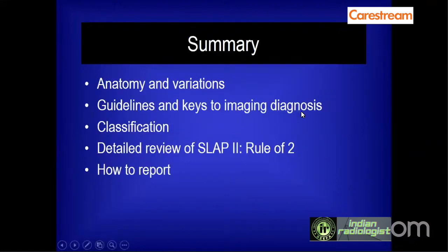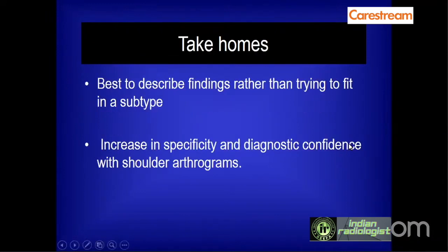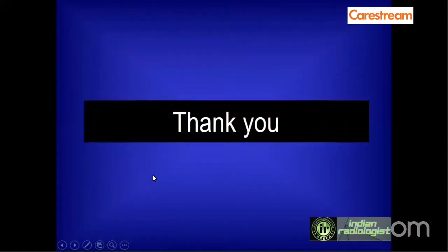To summarize: we dealt with anatomy and variations of the labrum, highlighted that variations are far more common than believed, studied imaging diagnosis guidelines, classified labral lesions into various types, reviewed SLAP 2 in detail including the Rule of 2, and covered how to report SLAP lesions — emphasizing that description is more important than fitting lesions into a specific type. Take-home points: describe findings rather than forcing them into a subtype, and increase specificity and diagnostic confidence with shoulder arthrograms, even at the cost of a slightly more invasive technique.